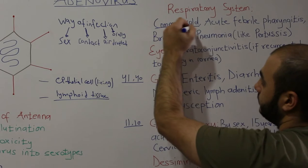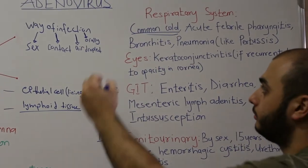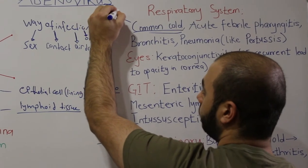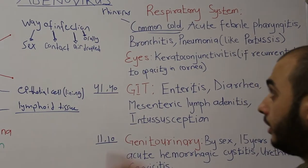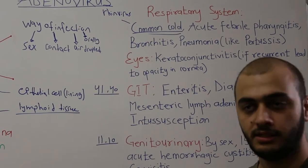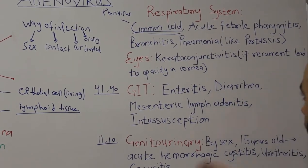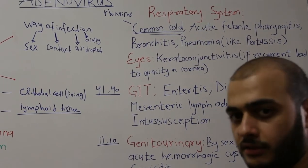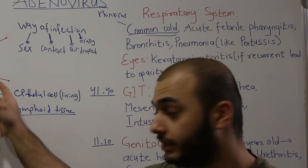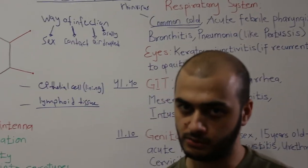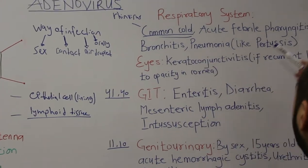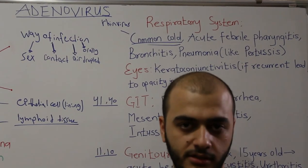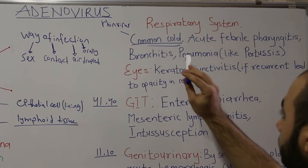Regarding respiratory manifestations: the prominent one is the common cold. We know that the common cold is mostly caused by rhinovirus, but adenovirus also accounts for a portion of cases. It can also cause acute febrile pharyngitis — due to the toxicity of the antenna, this virus can cause fever, and not all viruses can do that. It can also cause bronchitis.